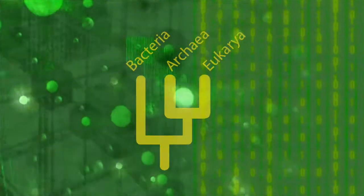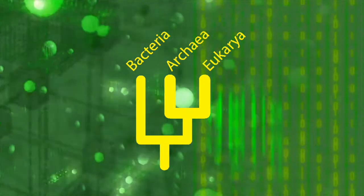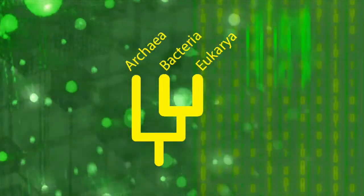In the classical Woesian tree, the root of the tree is in the branch leading to Bacteria. In the alternative Woesian tree, the root of the tree is in the branch leading to Archaea.